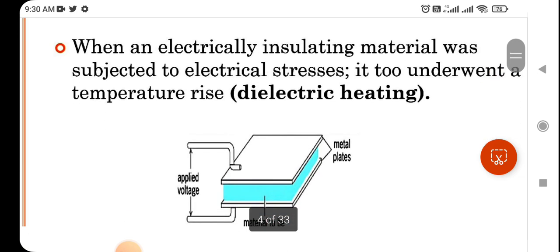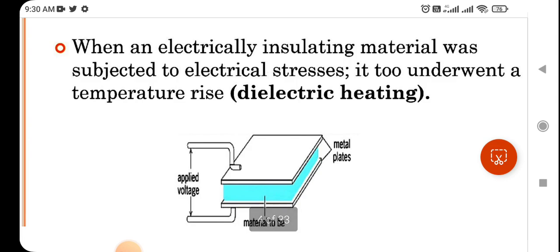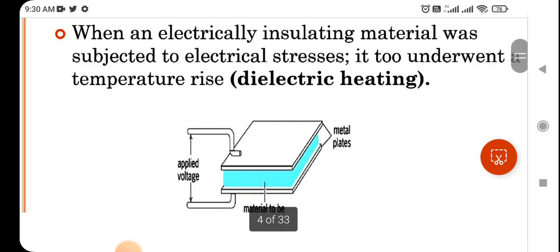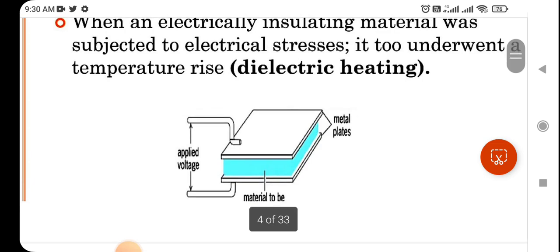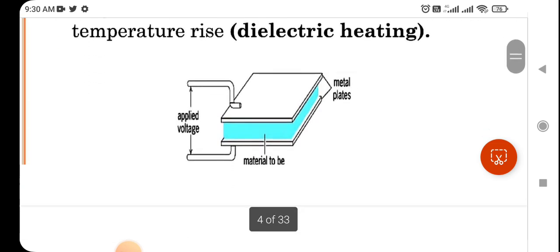Second heating is dielectric heating. Dielectric heating is used to heat insulating material. When insulating material is subjected to electrical stress, it undergoes a temperature rise. Such kind of heating is known as dielectric heating.